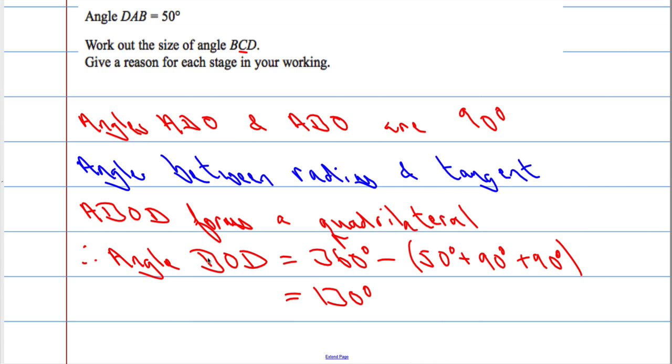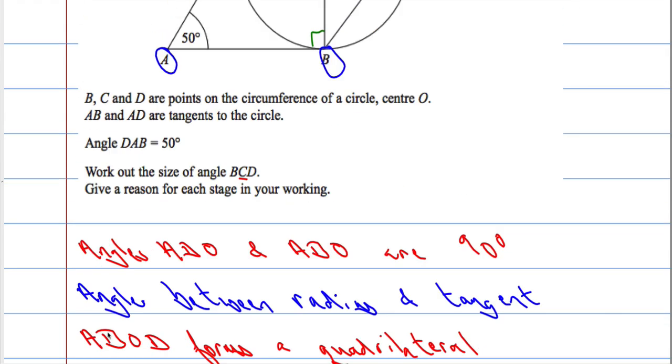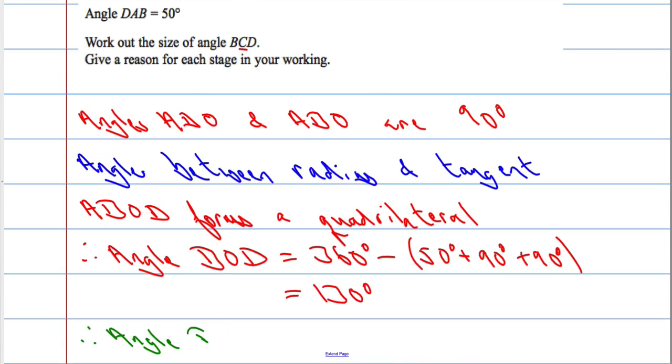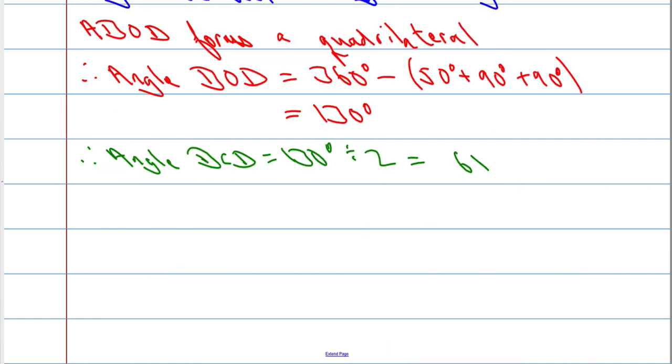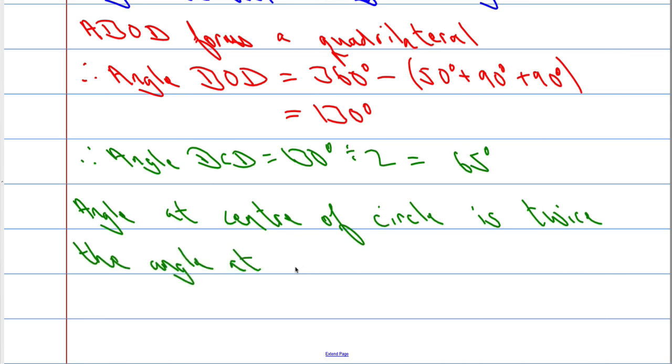And we can say now, therefore, angle BCD equals 130 degrees divided by 2 equals 65 degrees. And the reason for this part is the angle at the centre of a circle is twice the angle at the circumference.